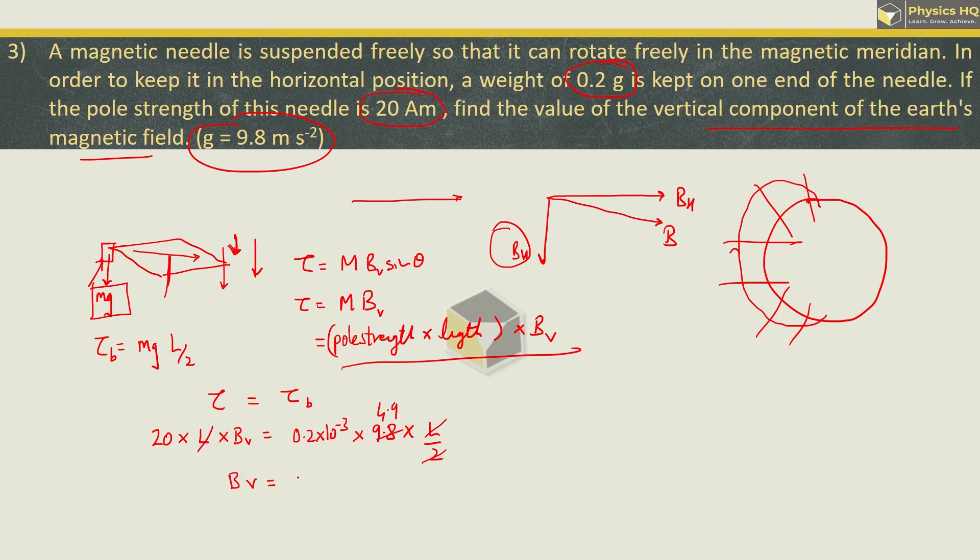Now, the balancing torque is M into G. When you simplify, you will get 0.2 into 4.9 divided by 20 into 10 raise to minus 1.2, which gives you 4.9 into 10 raise to minus 5 Tesla. I hope you have understood it.